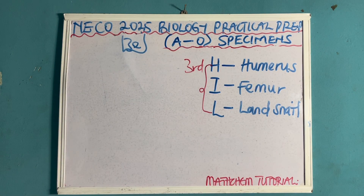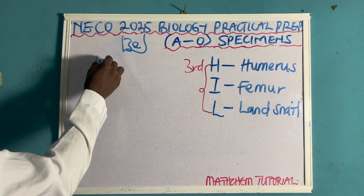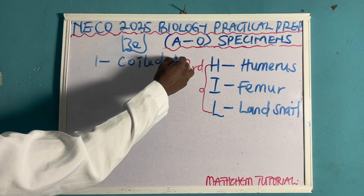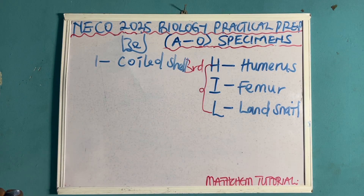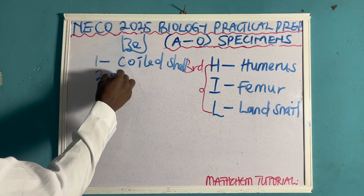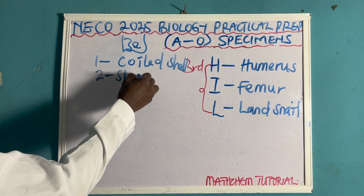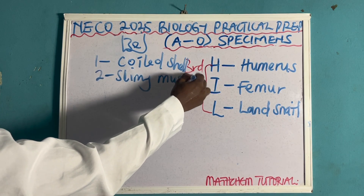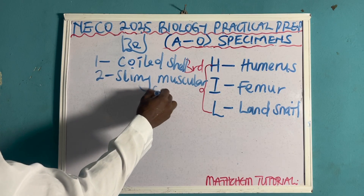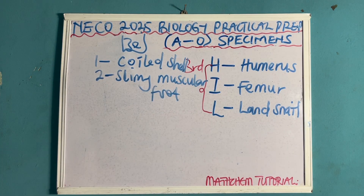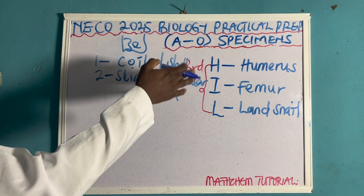Question 3E: they can ask you to list two observable features of specimen L, the land snail. Number one, it has a coiled shell. Number two, it has a slimy muscular foot.